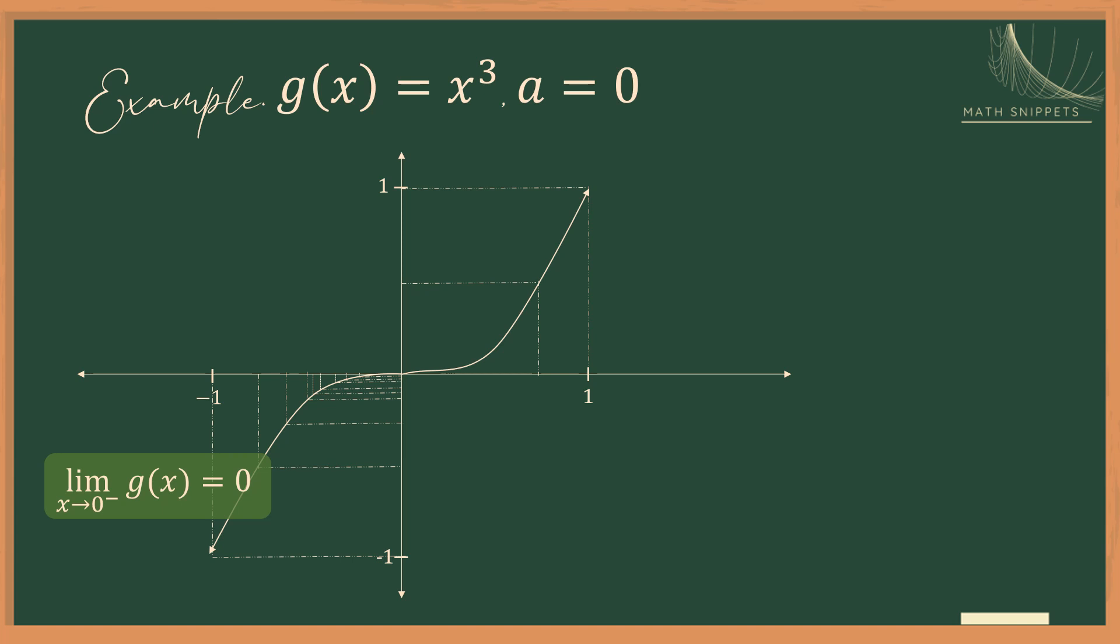On the right-hand side, as we move x to 0, the points on the graph are also getting closer and closer to the origin. This means that g is getting closer and closer to 0. So we have the right-hand limit, which is the limit of g of x as x approaches 0 from the right, is equal to 0.